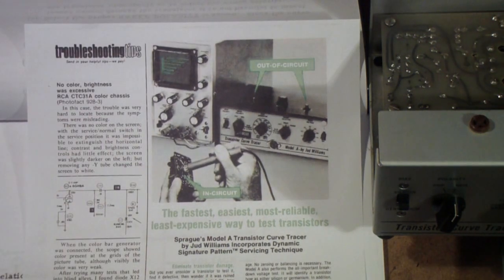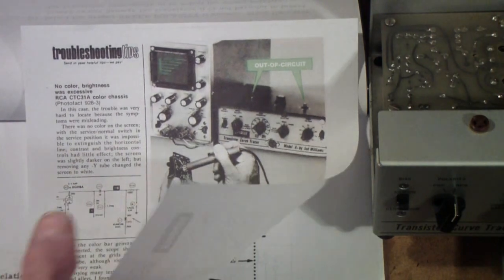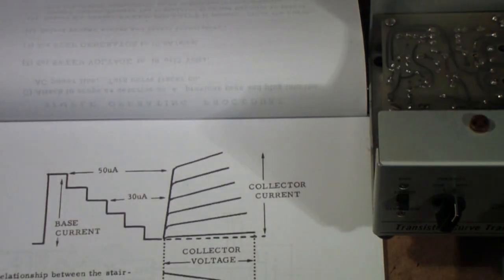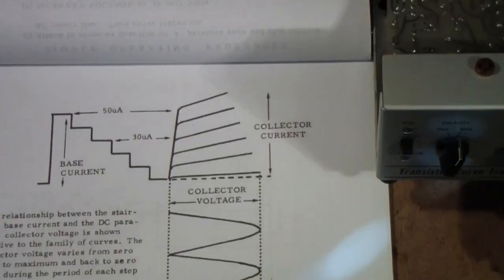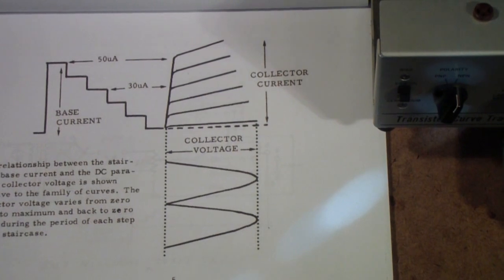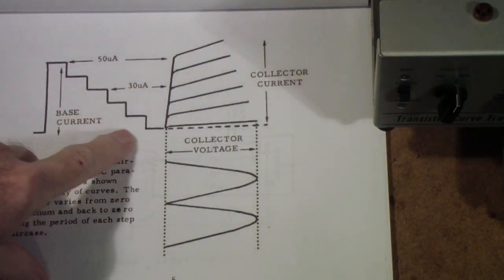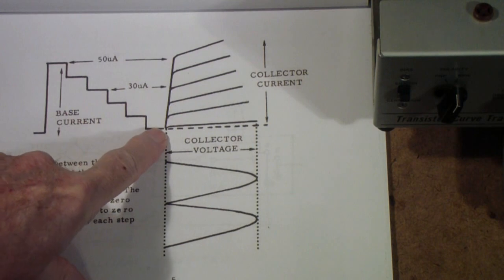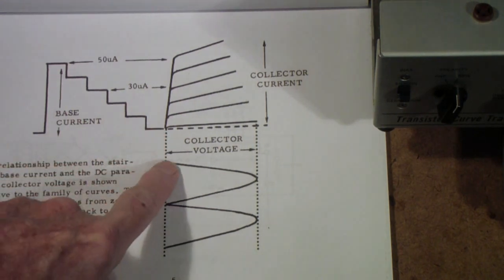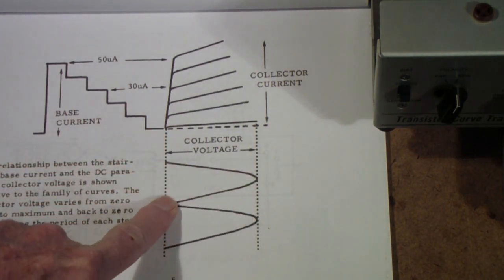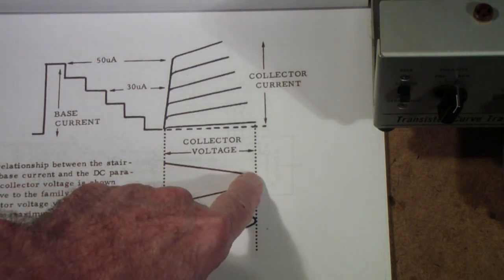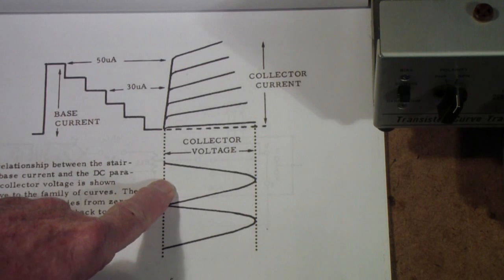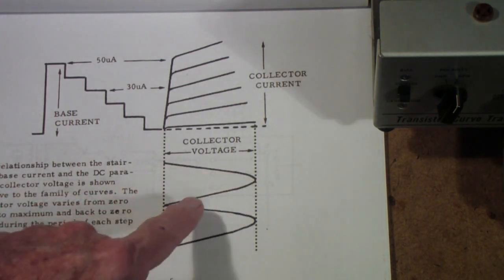At any rate, here is basically what you're trying to do with a curve tracer. You're stepping the base current. And with each step in the base current, you're sweeping the collector voltage from zero to maximum and back to zero again. A better way would be if this were a linear trace that snaps back really fast rather than this. But I'll show you in a minute.